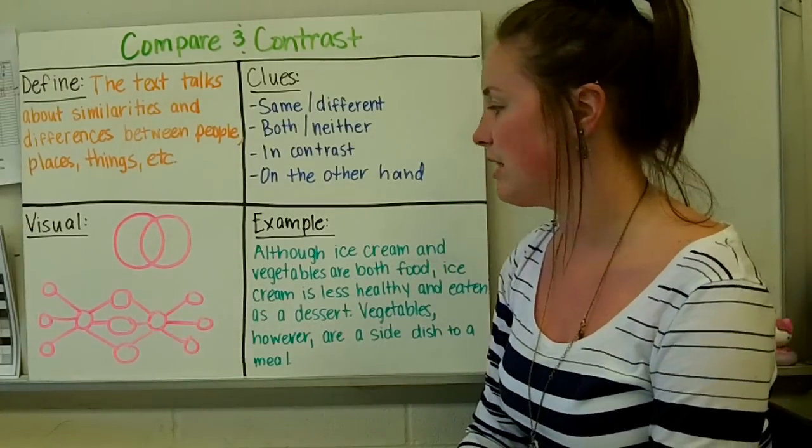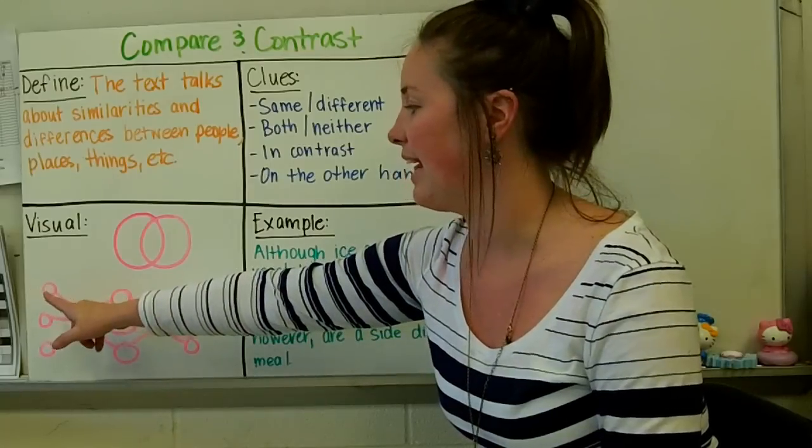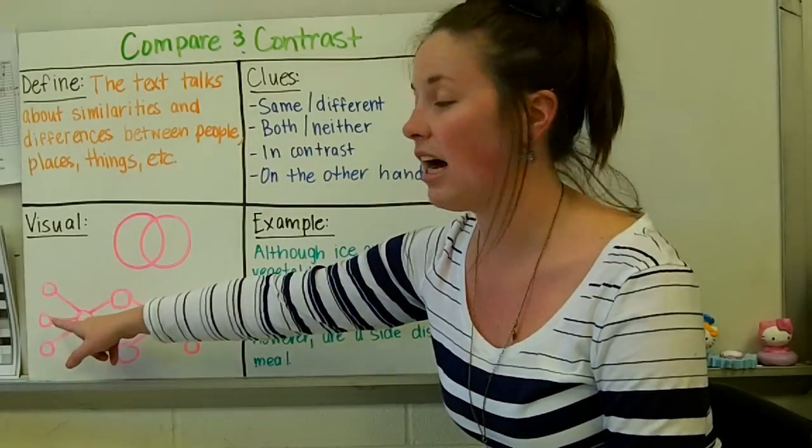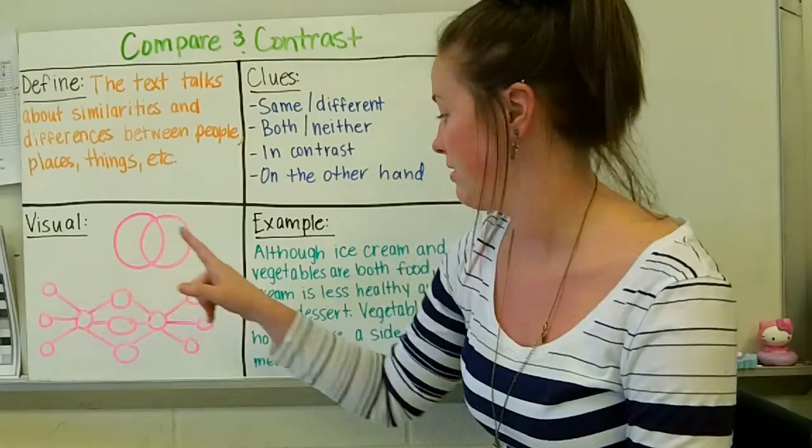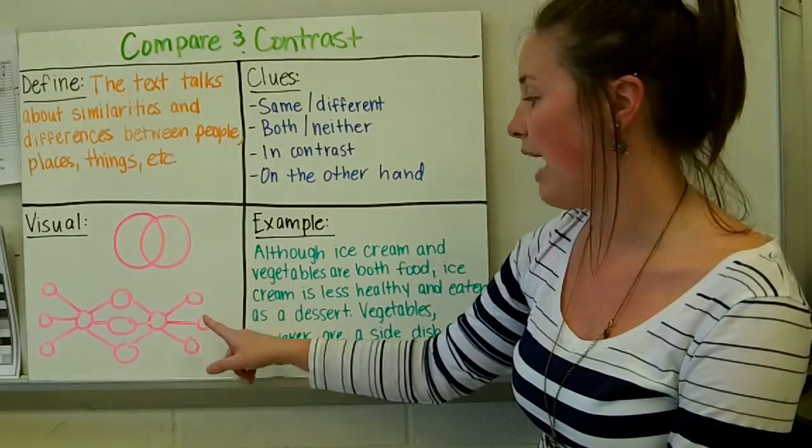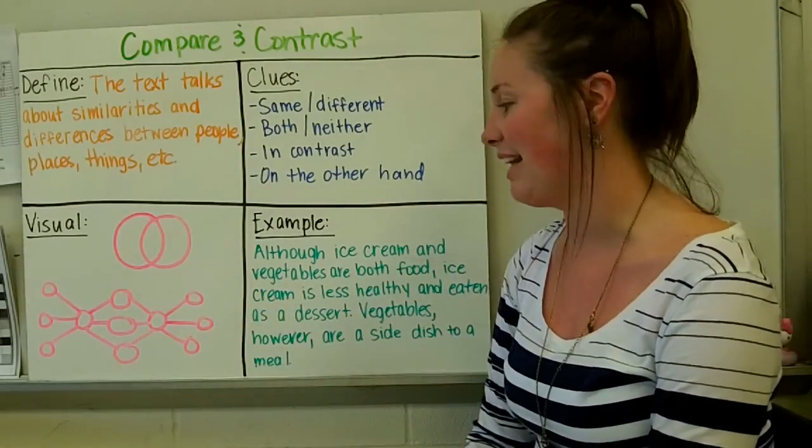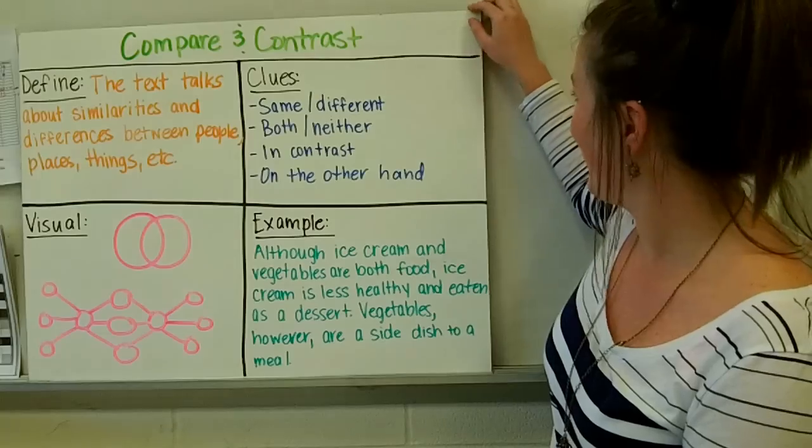On the outside circles, on ice cream, I would write that it is less healthy, that it is also eaten as a dessert. And for vegetables, I would put they are healthy and they are eaten as a side. One more to go.